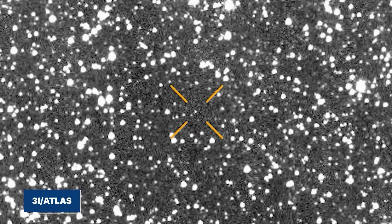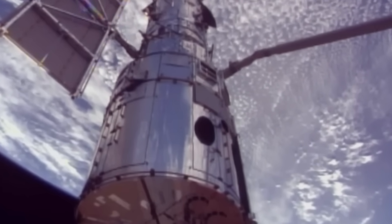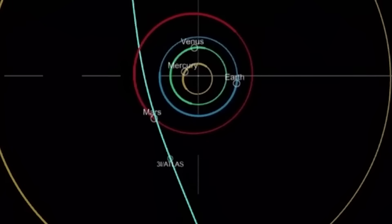Its name is 3i/ATLAS, the third known interstellar object ever detected. But to some of the brightest minds on Earth, it might be something more. Harvard astrophysicist Avi Loeb has a phrase for what we're seeing: This is how a mothership behaves.